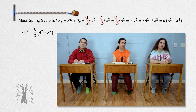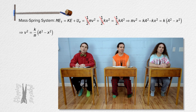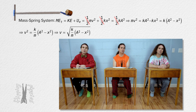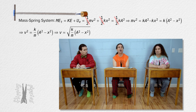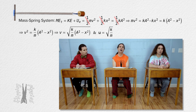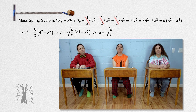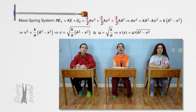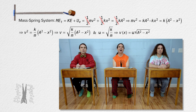On the right side we can factor out the spring constant and divide both sides by mass to solve for velocity squared. Then we can take the square root of the whole equation to get velocity equals the square root of the quantity spring constant over mass, all times the quantity amplitude squared minus distance from equilibrium position squared. And in a mass-spring system, angular frequency equals the square root of spring constant over mass. Nice!